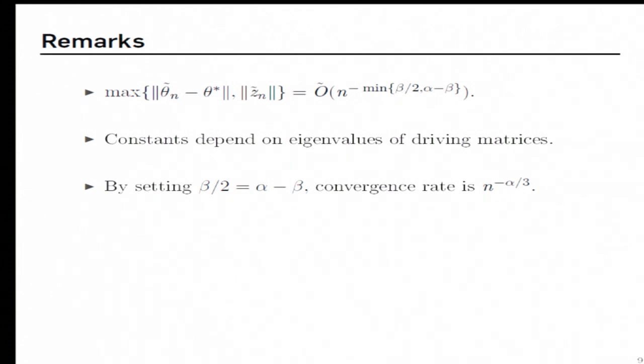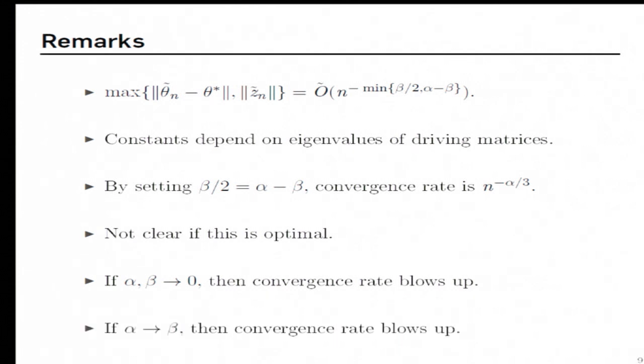So this means that by choosing alpha close to 1, one can get a convergence rate of N to the power minus 1 over 3. It's not clear at this point if this is the optimal convergence rate. But we can draw some conclusions from the convergence rate that we have. As these terms alpha and beta go to 0, the convergence rate blows up. This is because we are now working with constant step size algorithms. And lastly, as alpha goes towards beta, again our convergence rate blows up. This is because the two times scale algorithm now behaves like a one times scale algorithm. Okay? Let me finish over this point. Thank you.